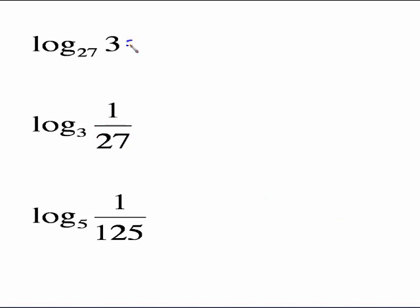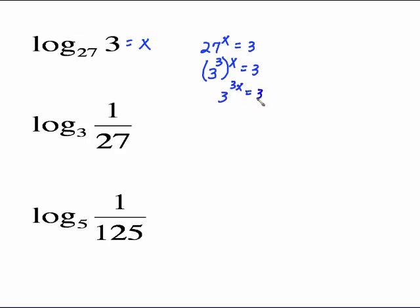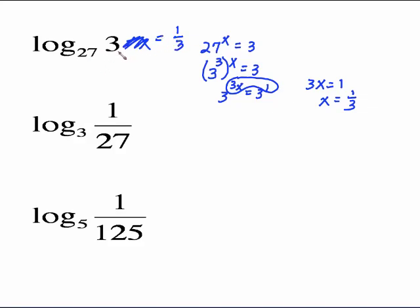Another one: put equals x, then 27 to the x equals 3. The common base is 3. 27 is 3 to the third, so this is 3 to the third raised to the x equals 3 to the first. Exponent laws give 3 to the 3x equals 3 to the first. Equal bases, equal exponents: 3x equals 1, so x equals 1 third. Log base 27 of 3 equals 1 third because 27 raised to the 1 third power — the cube root — equals 3.